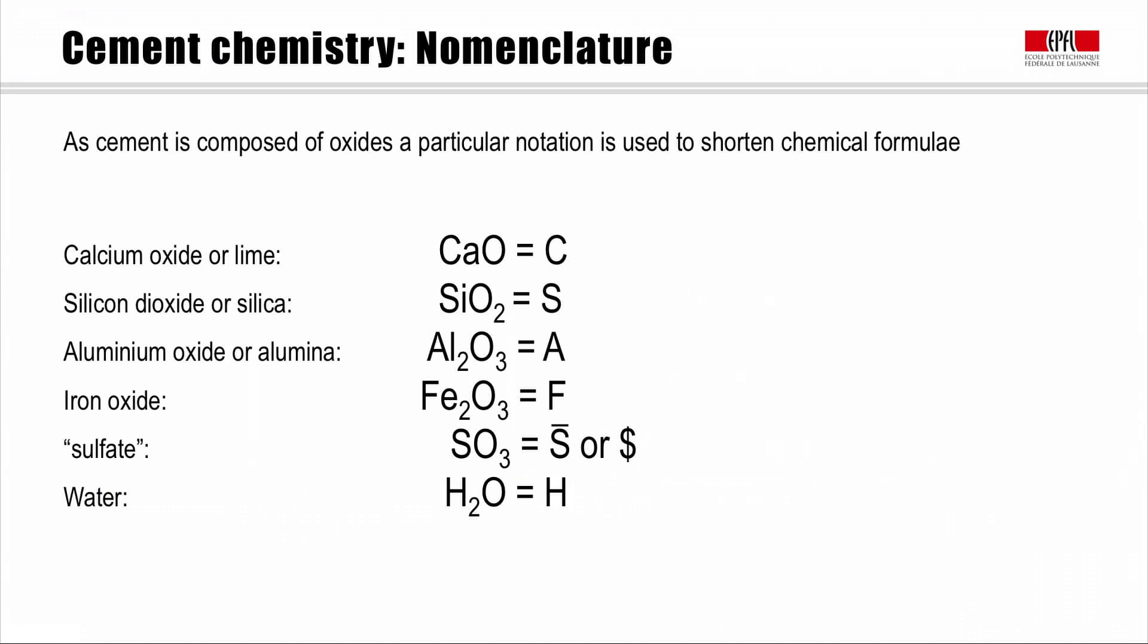So, to give some examples, you can see how the formula is shortened. If we talk about the main phase that is reacting in Portland cement, this is called tricalcium silicate or alite. And in the full chemical formula, this has to be written as Ca3SiO5. It's quite long. But this can be simply shortened by the cement chemist notation to C3S. And it's often also known by this name, C3S.